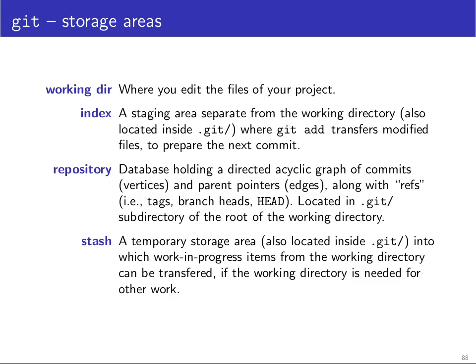What can initially be a little bit confusing with Git is that you're actually dealing with four different storage areas where your files can be located. So there's the working directory — that's where the files are that you actually modify with your editor, that your compiler reads and so on. Then there is the staging area, which is also sometimes called the index in the documentation, and this is separate from the working directory; it's located inside the .git subdirectory.